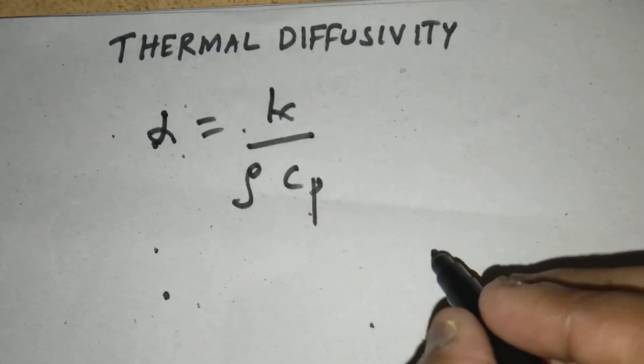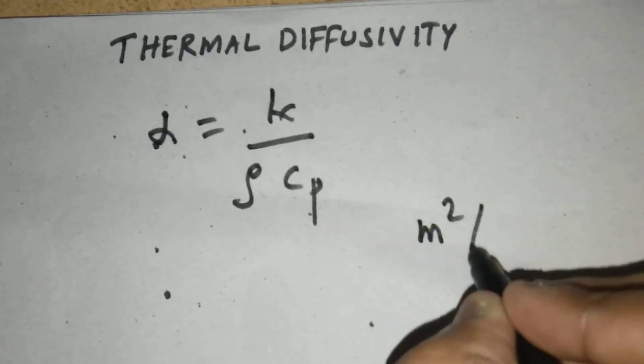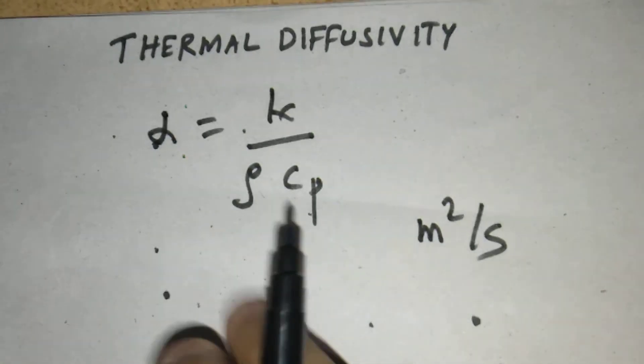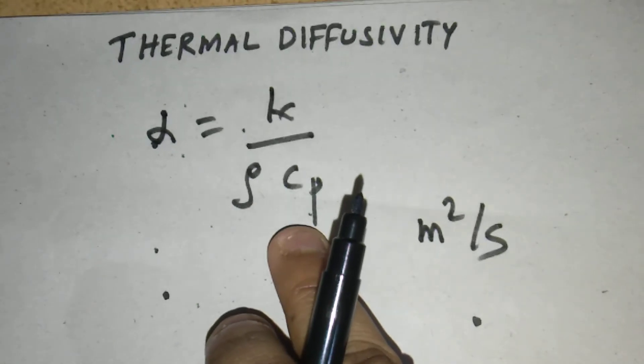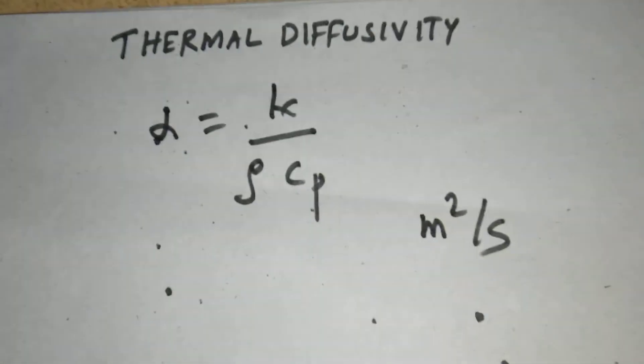Its unit is also meter square per second. This term is in heat transfer, while momentum diffusivity is in momentum transfer.